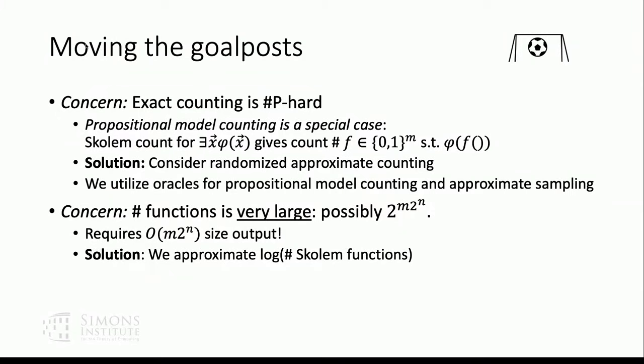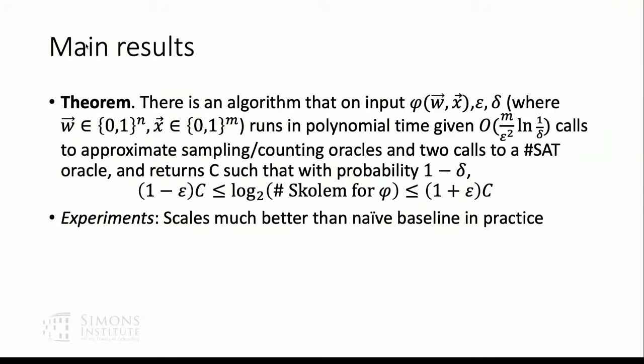All right. So the main results that we have are that we get a multiplicative approximate count of the log of the number of Skolem functions. Given some polynomial number of calls to approximate sampling and counting oracles and two calls to an exact SharpSAT oracle. And in these experiments, we'll see that it scales much better than a totally naive baseline. All right. First, I hope that this is not the last word on the problem and we'll come back to some hopefully potential ways it can be improved later.